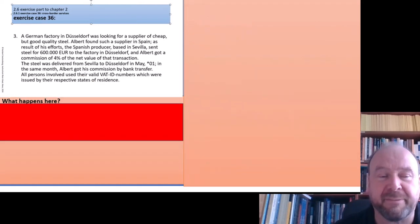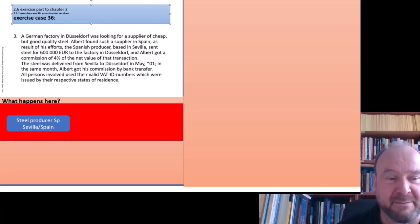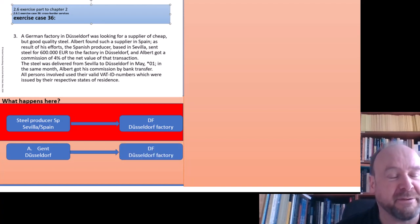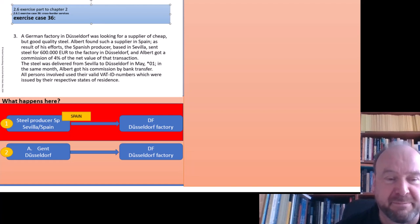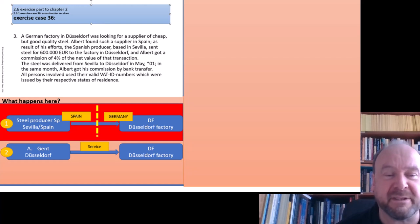Let's go on to number three — the factory in Düsseldorf looking for a steel supplier in Spain. Again: what are the contracts? We have a steel producer in Sevilla, Spain, selling steel to a Düsseldorf factory — that's contract number one. Then we have agent acting for the Düsseldorf factory — that's contract number two. Both transactions must be analyzed. A good goes from Spain to Germany in contract one; contract two is a service. Between Spain and Germany there's a border within the EU, so we must think about what that means for the treatment.